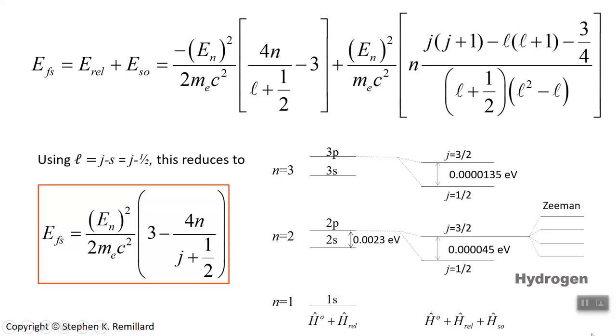This will be it for spin-orbit coupling for this time. We will apply some of these ideas later to rubidium atoms, so you can see this at work in heavier atoms.